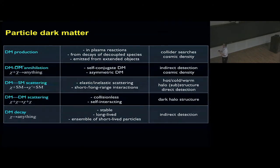There is collisionless dark matter, which is standard cold dark matter, but there's also self-interacting dark matter, which has interaction cross-sections similar to the hadronic cross-section, about one millibarn per GeV. Dark matter could decay or it could be stable, or it could decay and be long-lived, or an ensemble of short-lived particles.